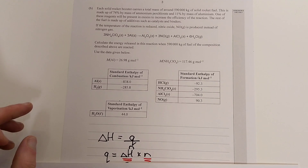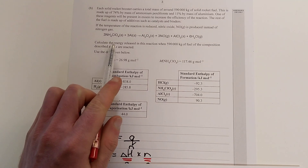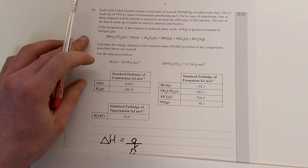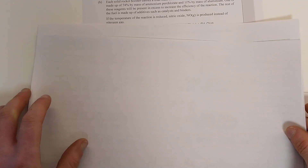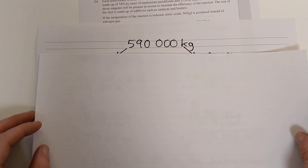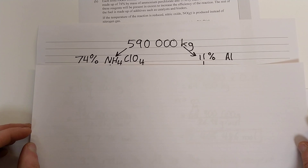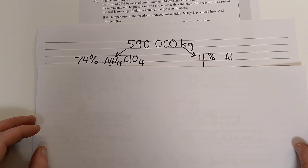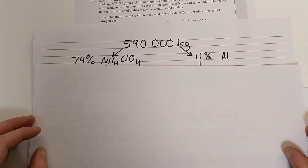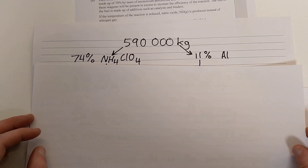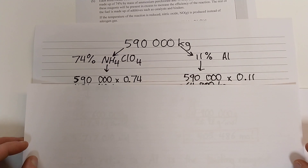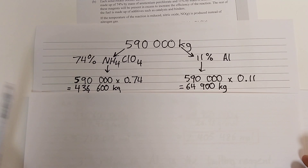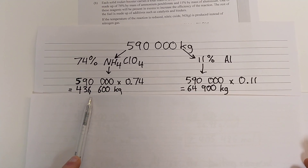Let's figure out which of these two rocket fuel components is our limiting reagent. We know that we start with 590,000 kilograms of rocket fuel — quite a big amount. 74% of that mixture is ammonium perchlorate and 11% is aluminium. So if 74% of that total amount is ammonium perchlorate, we do the maths and we figure out that equals 436,600 kilograms.